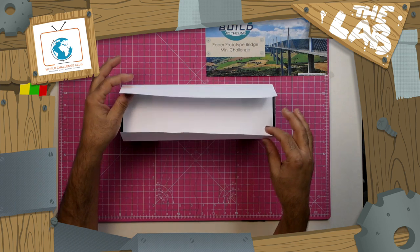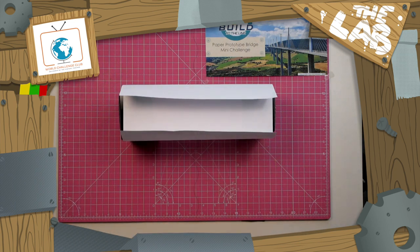So by folding a piece of paper into a channel shape he's made a strong beam or deck for his bridge.